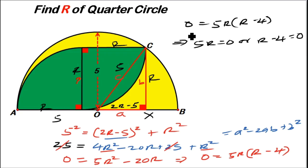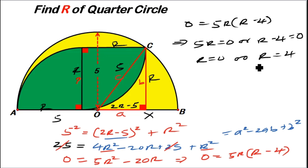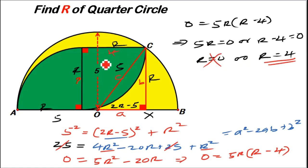When two factors equal zero, either the first or second factor is zero. So either 5r equals 0, giving r equals 0, or r minus 4 equals 0, giving r equals 4. Since r equals 0 means the diagram does not exist, our answer is r equals 4. Ladies and gentlemen, the radius of the quarter circle is 4 units. Thank you for watching — see you in our next presentation, and don't forget to subscribe.